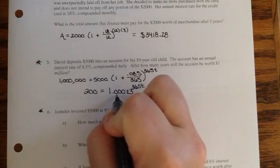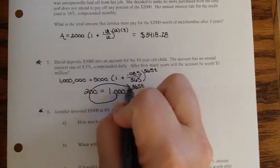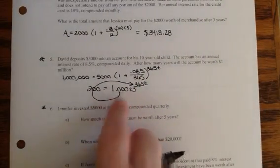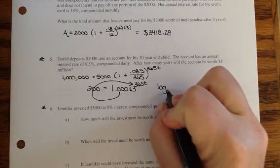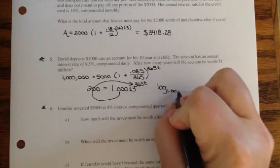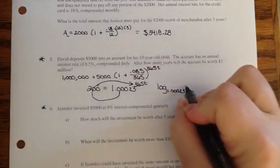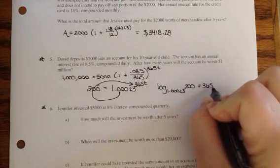But to get to this t, I need to convert this exponential into a logarithm. So I'm going to start right here at the base because this is my base. And I'm going to make what I call a little swooshy around the equal sign. And I do that because to convert this into a logarithm, I started at the base. So I'm going to write log. And now I have a base of 1.00023. And then if I follow my swooshy, the next number I touch is at 200 equals 365t.